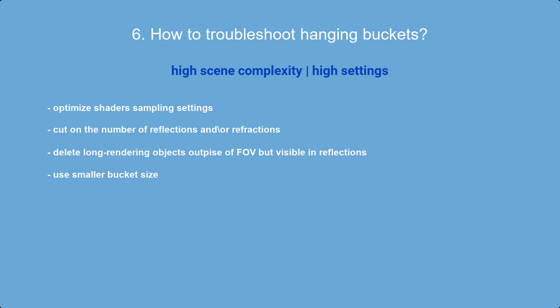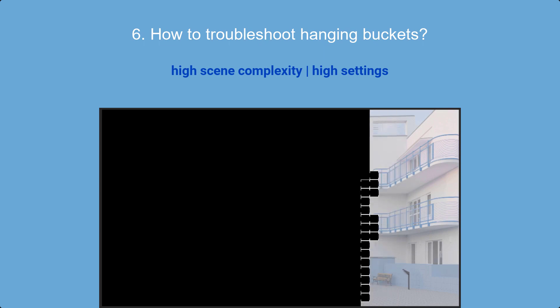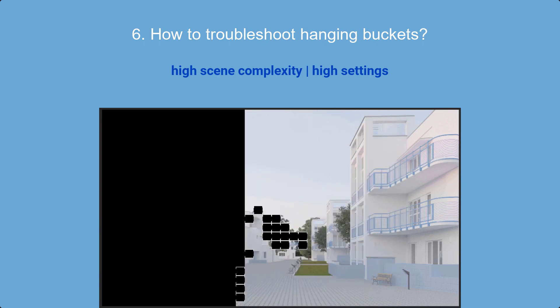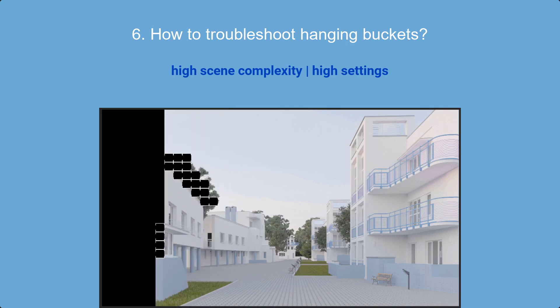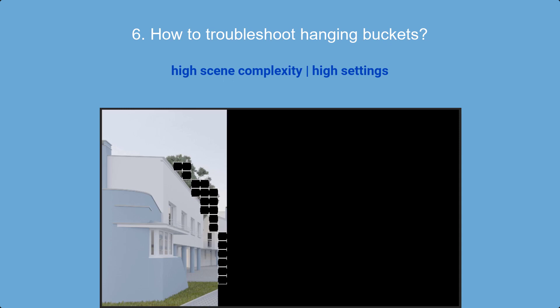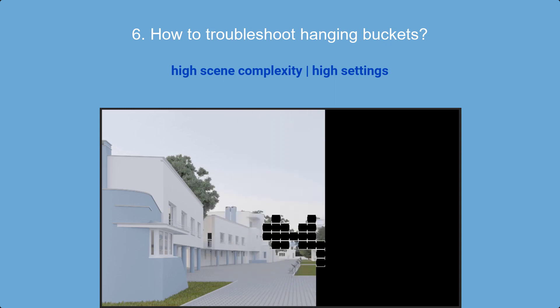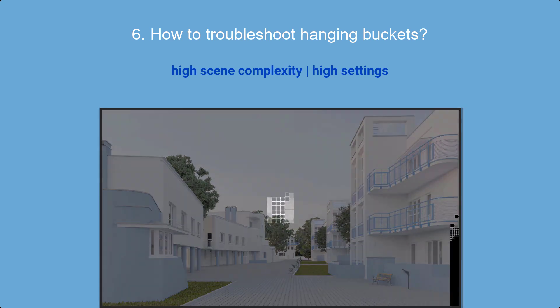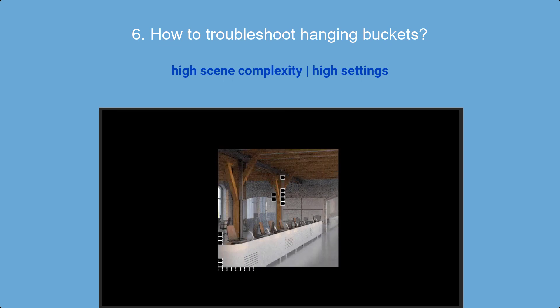If smaller buckets aren't enough, or you want to keep larger ones for efficiency, you can use the rendering sequence strategically. By starting from the slower part of the image, the problematic buckets begin early and have enough time to finish before the whole image completes. For example, in a scene where hanging buckets are in the upper-left (trees), rendering with a reverse left-right sequence caused them to get stuck right before completion. Reversing the sequence so trees render first solved the issue.